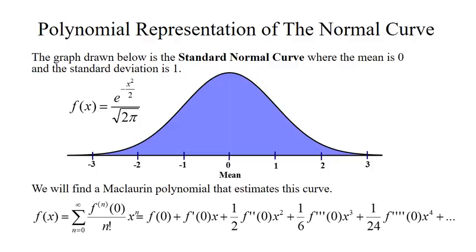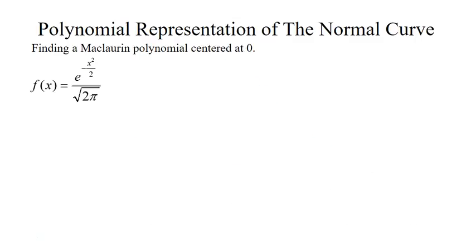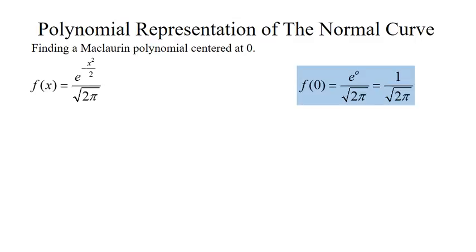So what we're going to do first is find all our coefficients. We need to evaluate the function at 0 — we just plug in 0 for x — and that gives us 1 over the square root of 2 pi.